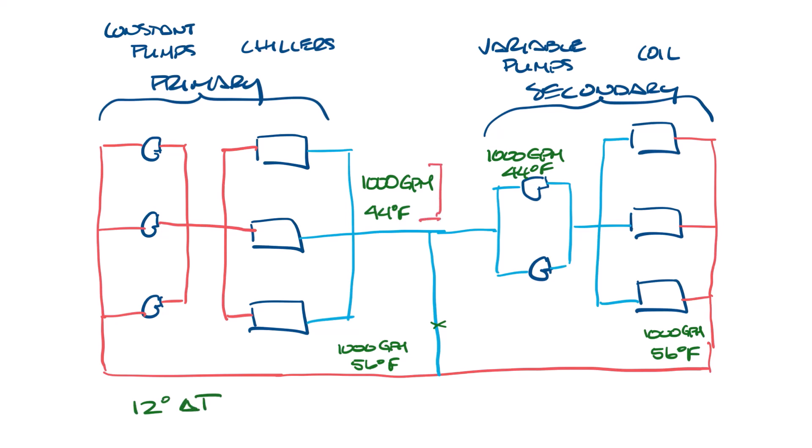Now let's say we still have that thousand GPM and 44 degree water here, but to make the math easy, let's say the secondary pumps are only moving 50% of the supply water. So the other half would be diverted through the decoupler. So at this point you'd have 500 GPM and 56 degree water coming through the secondary pumps and to the water coils. And so we'll have 500 GPM and 56 degree water coming out of the coils. Since 500 GPM were diverted to the decoupler, that water is going to mix with the water coming out of the coils and you're going to end up with a thousand GPM and 50 degree water over here going back to the return side of the chillers. And so that's a six degree delta T.